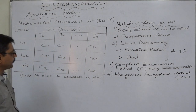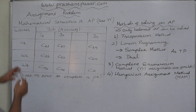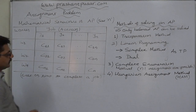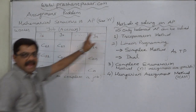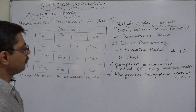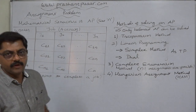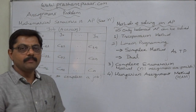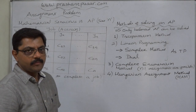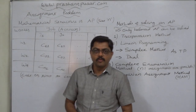Before solving, let us study the mathematical structure of an assignment problem. The size of the assignment problem is always n×n — equal number of rows and columns must be there, otherwise it is unbalanced. If the number of jobs and number of workers are equal, the assignment problem is called a balanced assignment problem. If they are not equal, it is called an unbalanced assignment problem.